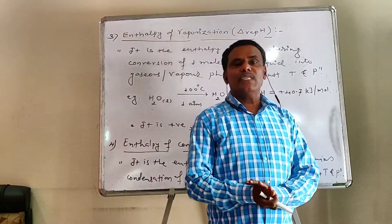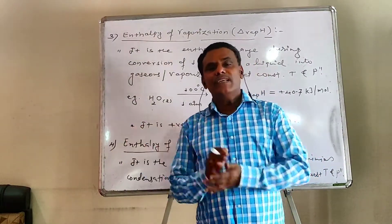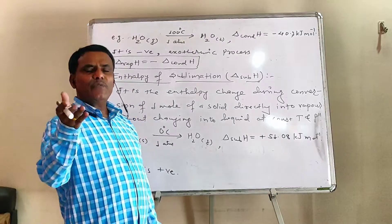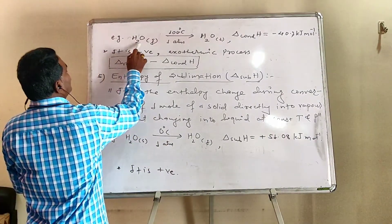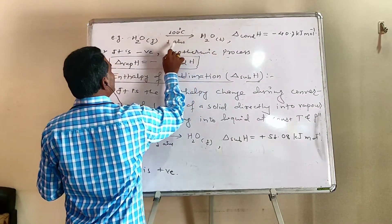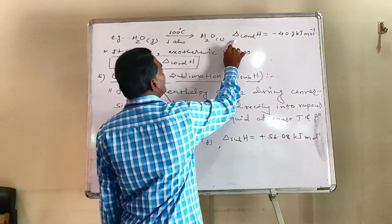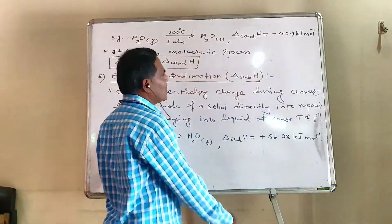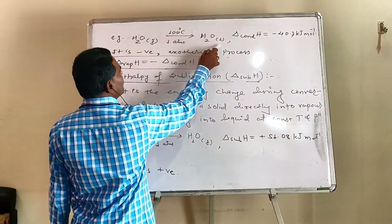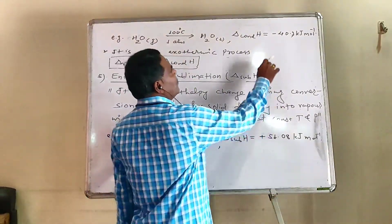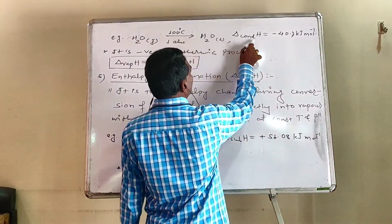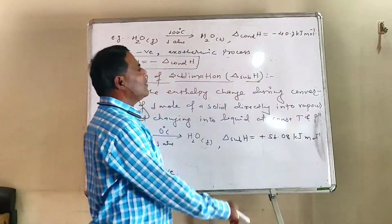It is the enthalpy change during conversion of one mole of vapor into liquid at constant temperature and pressure. Let's see its example — the reverse of vaporization. H2O, one mole in gaseous phase, when it changes into H2O liquid at 100 degree Celsius and 1 atmospheric pressure, the enthalpy of condensation is minus 40.7 kJ per mole, meaning 40.7 kJ of heat is given out.